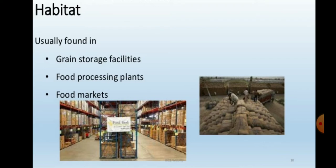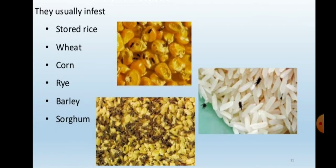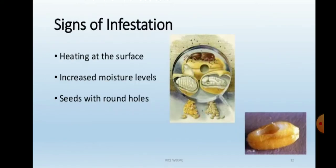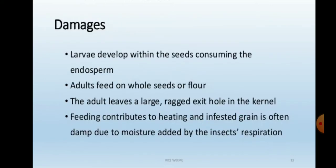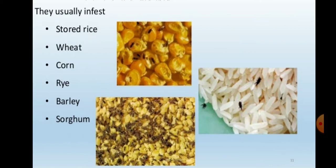In the life cycle, the rice weevil breeds from April to October. This is the active breeding season.